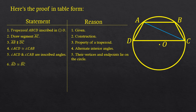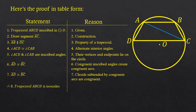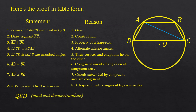Knowing that, step six is that arc AD is congruent to arc BC, because congruent inscribed angles create congruent arcs. Step seven states that line segment AD is congruent to line segment BC, because chords subtended by congruent arcs are congruent. Finally — the three dots meaning 'therefore' — trapezoid ABCD is isosceles, because a trapezoid with congruent legs is isosceles. QED — Latin for 'quod erat demonstrandum,' meaning 'that which was to be proven.'